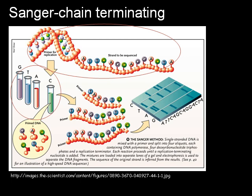To each reaction is added only one of the four dideoxy nucleotides, which are the chain-terminating nucleotides lacking a 3-hydroxyl group required for the formation of a phosphodiester bond between two nucleotides, thus terminating DNA strand extension and resulting in DNA fragments of varying lengths. The newly synthesized and labeled DNA fragments are separated by size using gel electrophoresis on a denaturing polyacrylamide gel, with each of the four reactions run in one of four individual lanes. The DNA bands are then visualized by autoradiography or UV light, and the DNA sequence can be directly read off the X-ray film or gel image.